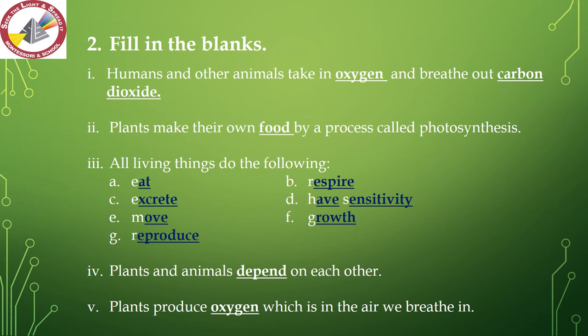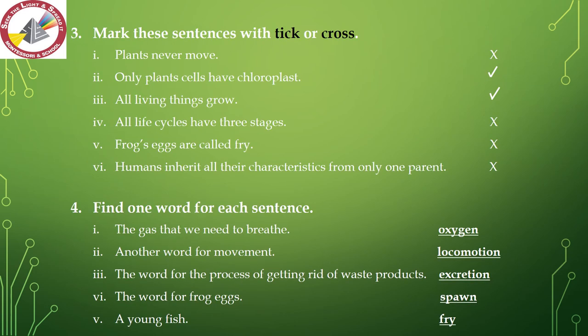Number 5 — plants produce oxygen, which is present in the air we breathe in. Question number 3 is: mark these sentences with a tick or cross. Statements are given and you have to put a tick or cross carefully.